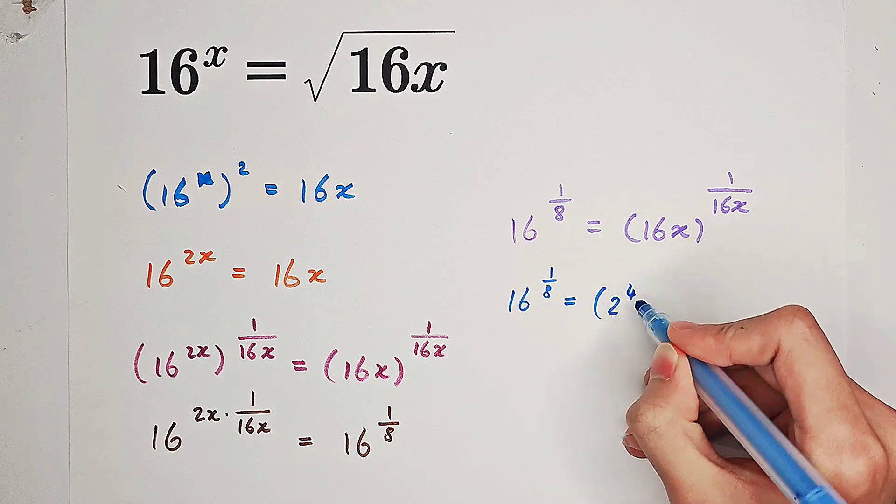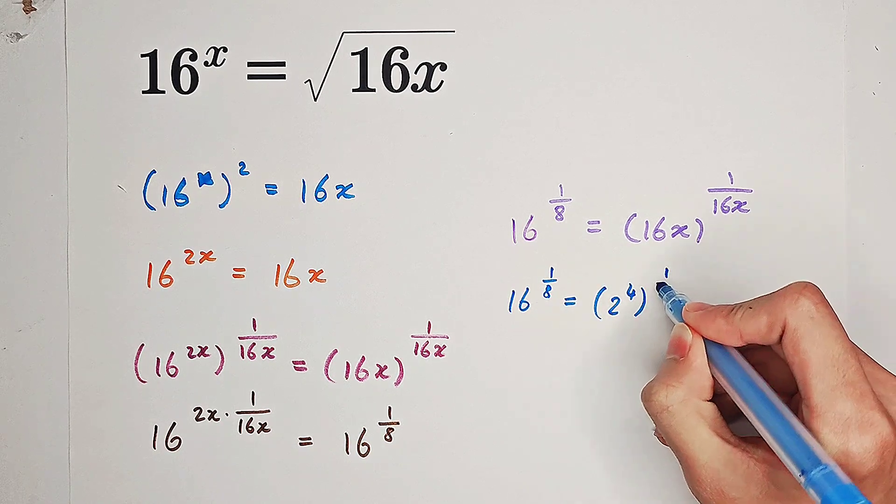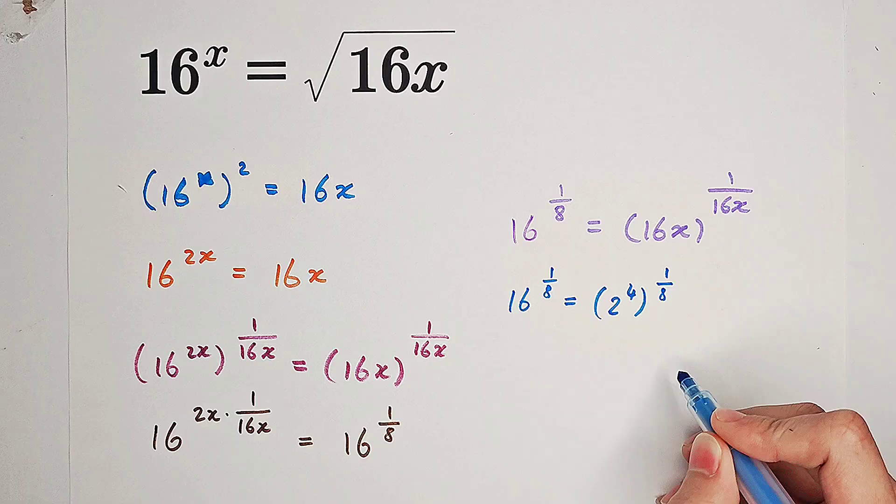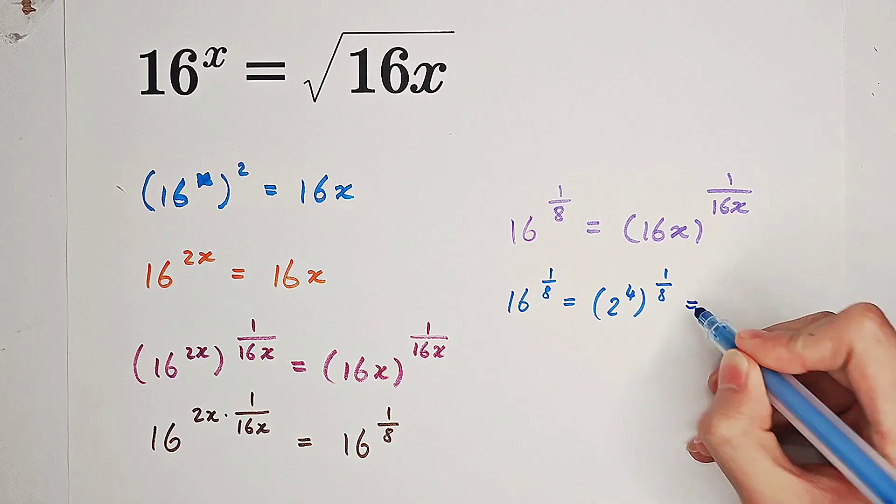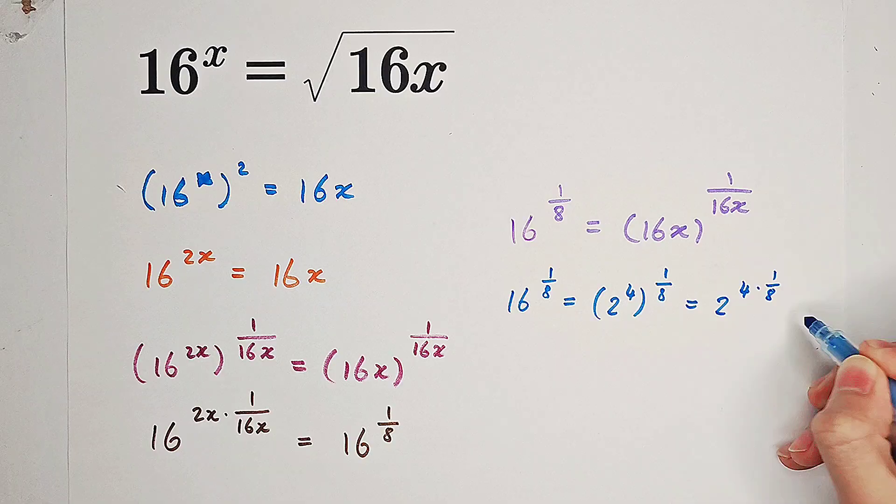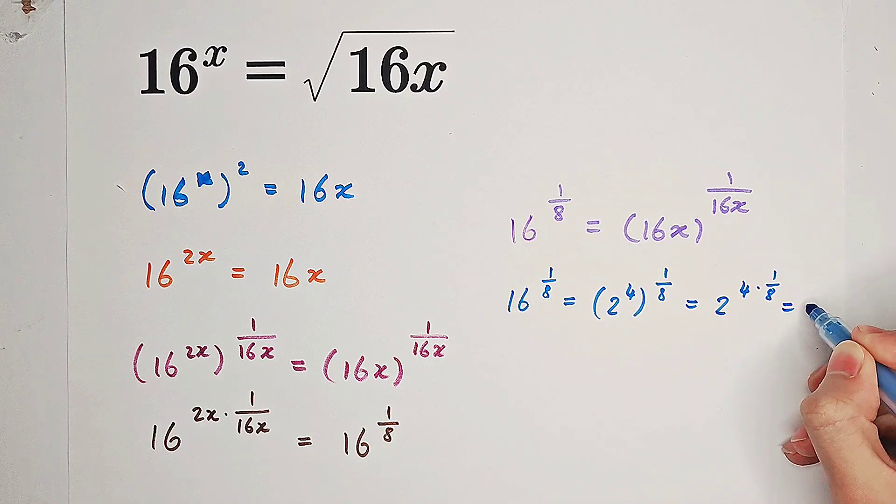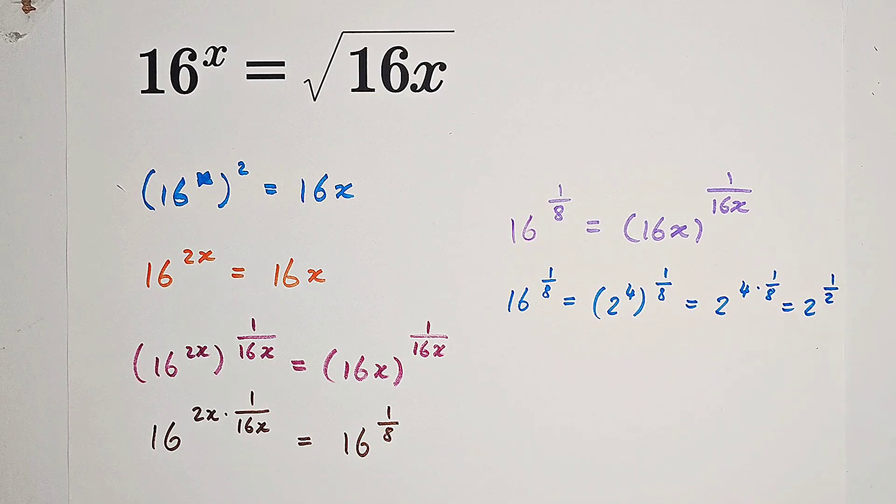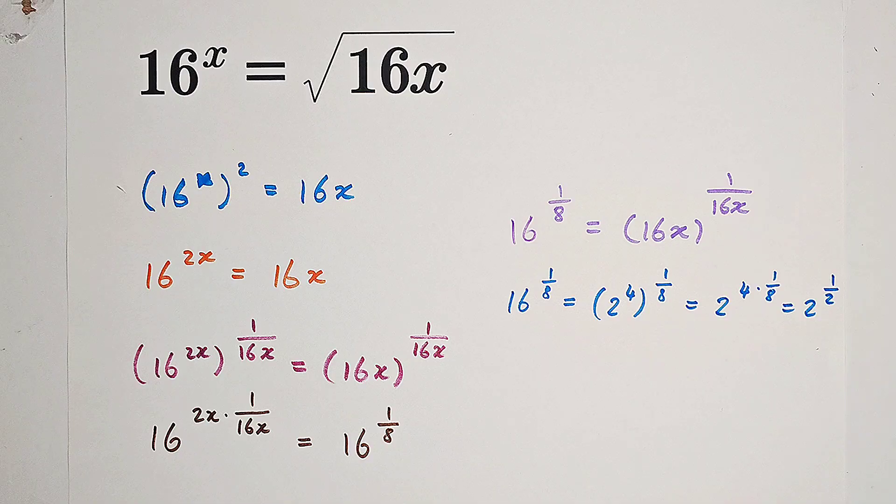Because 16 is 2 to the power of 4, so it can be rewritten as 2 to the power of 4 times 1 over 8. 4 over 8 is just a half, so the left hand side will be 2 to the power of a half.